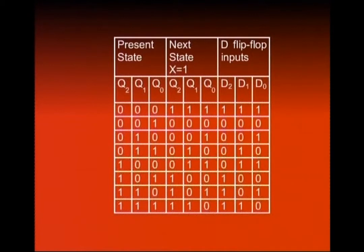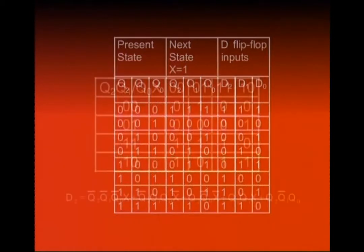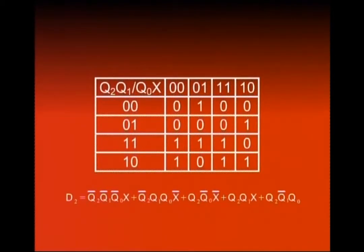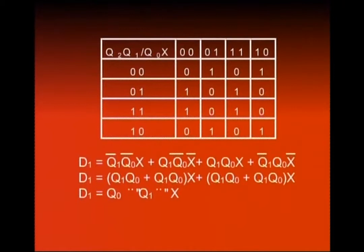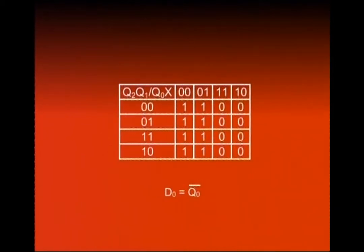Next step mein K-maps banane hain aur D flip-flop input table ki information ko map karke boolean expressions nikalne hain. D2 ki expression jo aa rahi hai K-map se: Q2̄·Q1̄·Q0̄·X + Q2̄·Q1·Q0·X̄ + Q2·Q0̄·X̄ + Q2·Q1·X + Q2·Q1̄·Q0. Yeh expression J2 aur K2 se zyada complex hai — zyada sum terms hain. D1 ki expression: Q0 XOR Q1 XOR X. D0 ki expression is equal to Q0 bar.